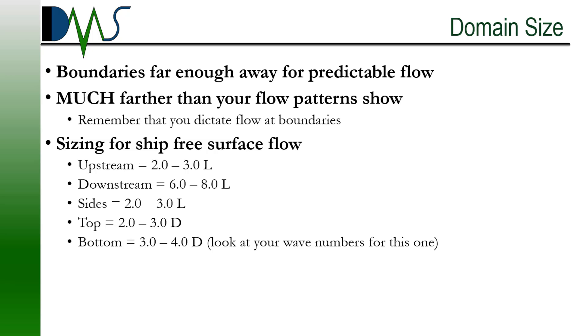Myself, I do a lot of work in ship hydrodynamics. So here are some guidelines for a typical ship resistance free surface flow CFD problem. Your upstream inlet boundary should be two to three body lengths ahead of your ship. Your downstream outlet boundary should be six to eight body lengths behind it. Your sides should be two to three body lengths to either side of it. Your top should be two to three body depths above it. And then your bottom should be three to four body depths below your body. That last one there, I would also check my wave numbers as a second caveat on that one as well, because you're dealing with waves and free surfaces, but that is specific to ships and resistance.